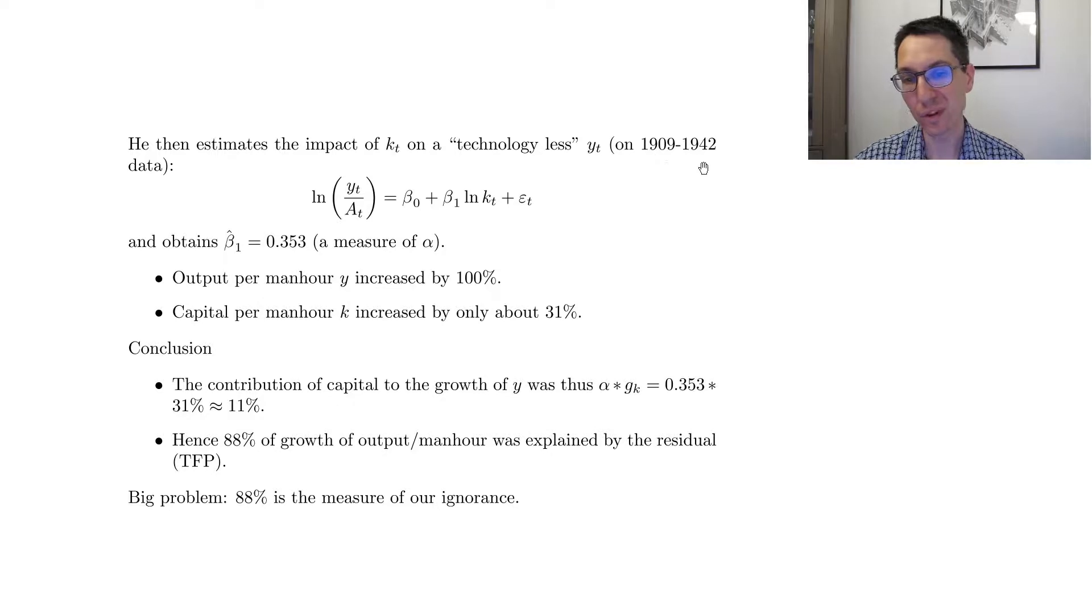By the way, so he removes the years from 1943 to 1949, because they kind of don't fit well his curve. So that's dubious, but that's what he does. And he obtains, so what we're looking at is beta_1, beta_0, we don't care because it's a function of the starting point. So beta_1 hat is 0.353, which is quite close to what we already had here, 0.34.